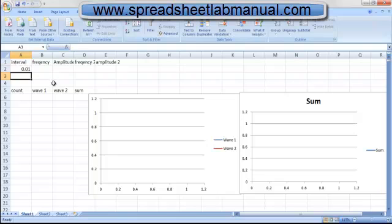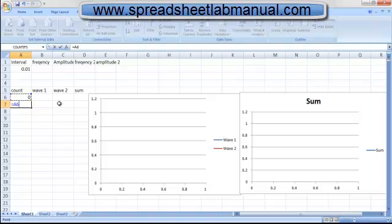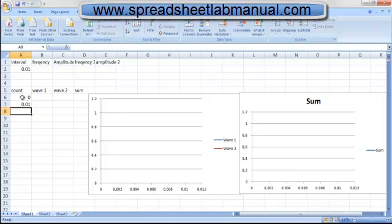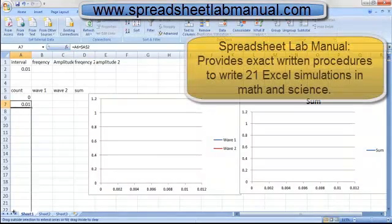In order to do this, we have to count by tiny intervals. Our count column, which you could think of as time, is going to be in column A. And to do this, we're simply going to add the previous time to the count interval, which we're going to lock in to cell A2. And we're going to drag that all the way down to cell 2006.